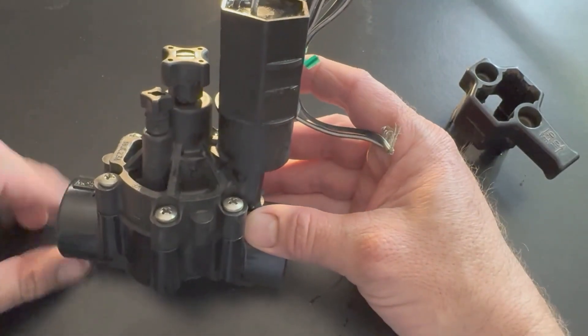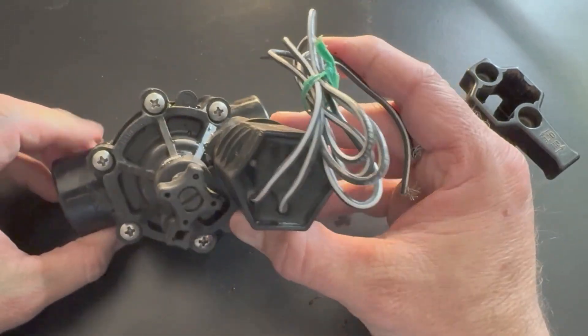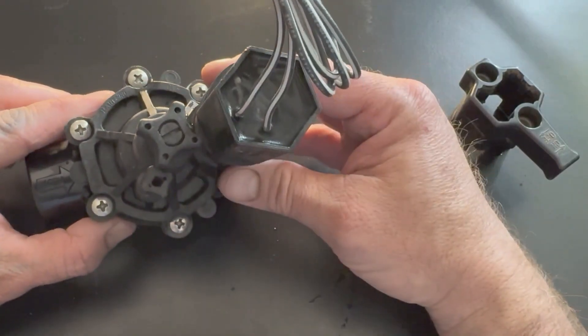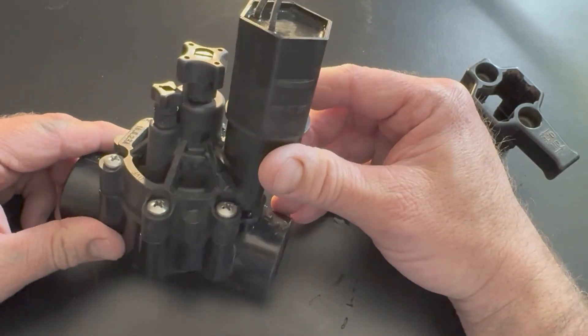If you've got a valve where the diaphragm goes out, these have six screws - three on each side. You take these screws out and it gets you right down to the diaphragm.